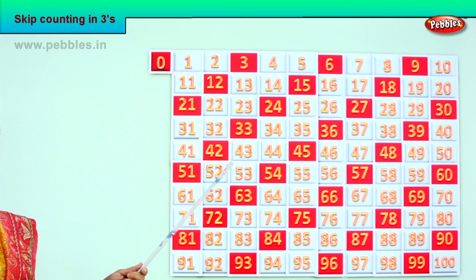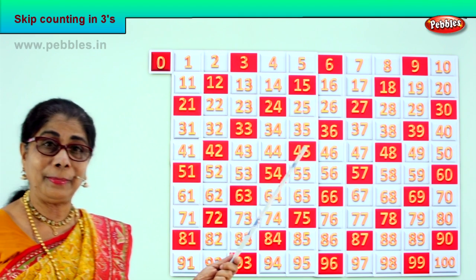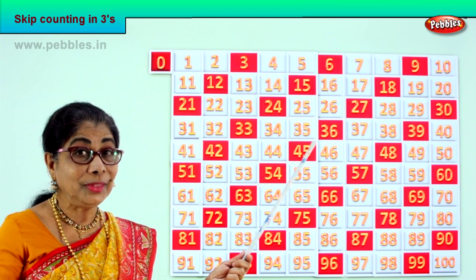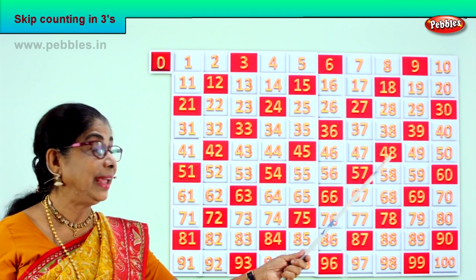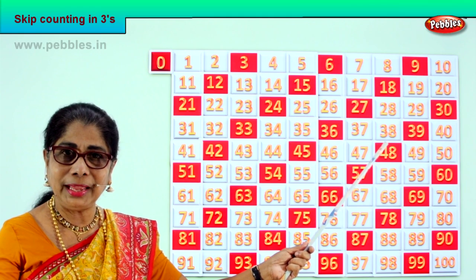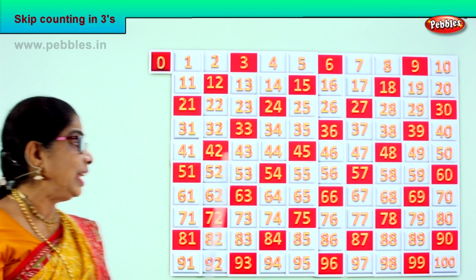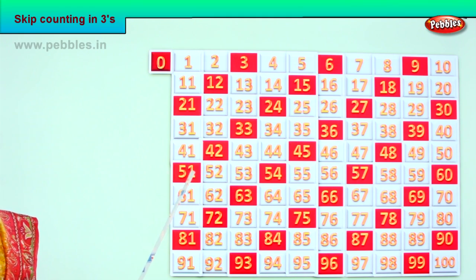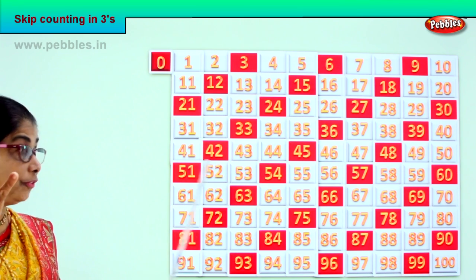After 42 — 43, 44, 45. After 45 — 46, 47, 48. After 48 — 49, 50, 51. After 51 — 52, 53, 54.